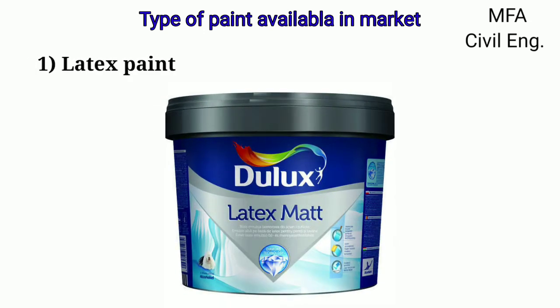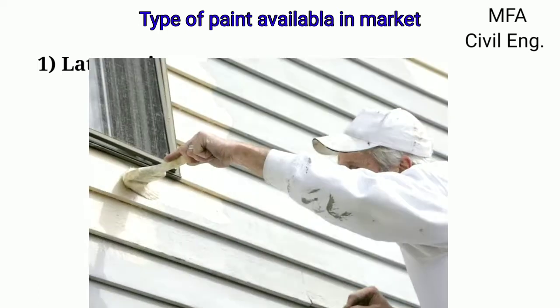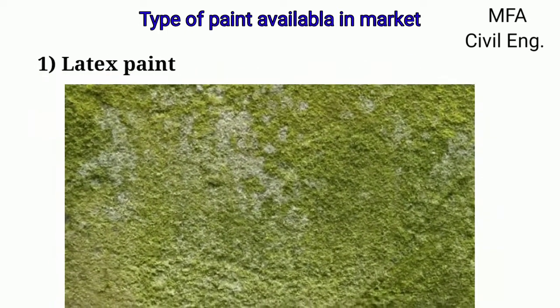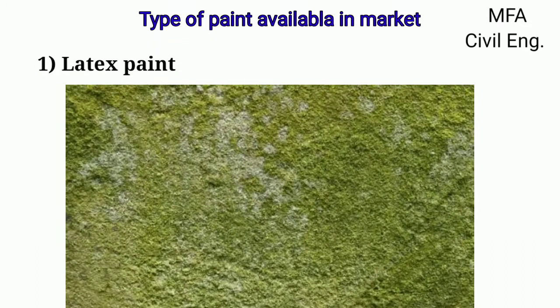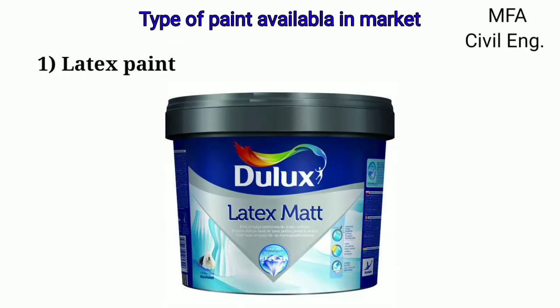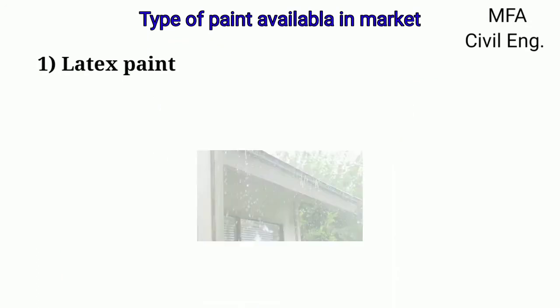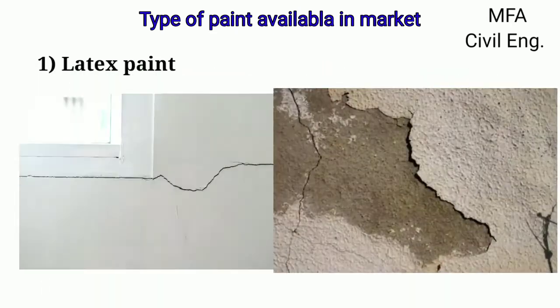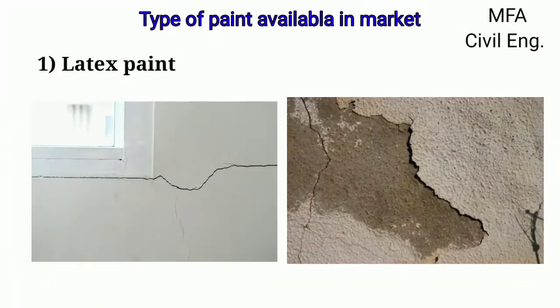Latex paint are water based paints that offer a variety of benefits. Latex paint dries faster than oil paint. These paints have greater resistance to mildew and fading. The disadvantage of latex paint is that they are susceptible to weather change, which can cause them to crack or peel off.